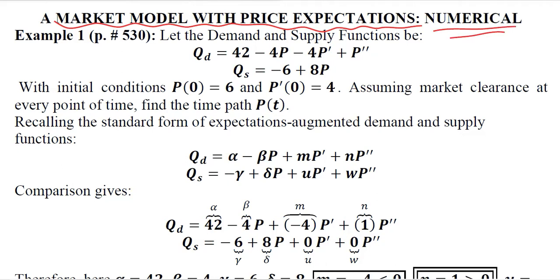In the book of Alpha C. Chiang, there is one example on page number 530 where the demand and supply functions are given. This is the demand function and this is the supply function. You can see that there are no price expectations on the supply side, which is as per the initial supposition in our model that we developed.